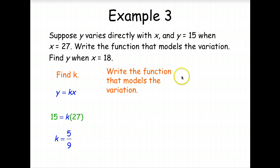So now we're going to write the function that models this variation, Y is equal to 5 ninths X. So we've written the function. Now we need to find Y when X is equal to 18. So we're going to simply substitute in 18 for X, and we find out that Y is equal to 10. Very good. You're ready to begin working on the assignment.